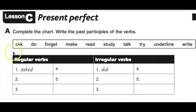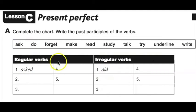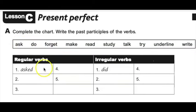Up here we have some verbs, and what you have to do first is decide if they are regular verbs or irregular verbs. To make them a past participle you add an -ed to the end. Go through this list and see if you can identify which are regular and which are irregular, and then write the past participle form in these boxes here.